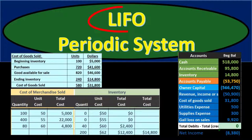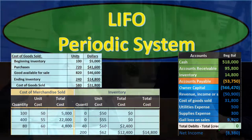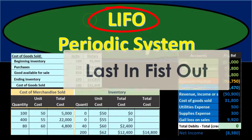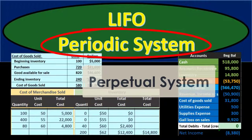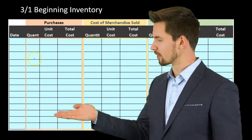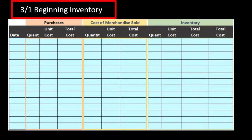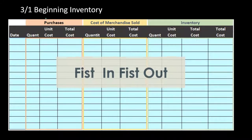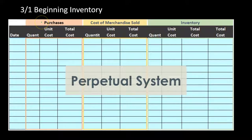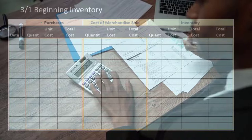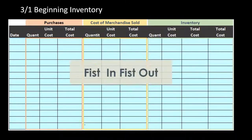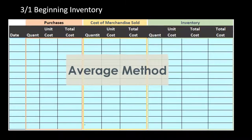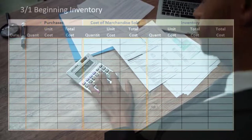In this presentation we will discuss the last in first out inventory system on a periodic basis rather than a perpetual basis. As we go through this process we want to always be comparing the LIFO system to other systems such as first in first out and average, as well as comparing the perpetual system to the periodic system. We will work through a problem using a worksheet.